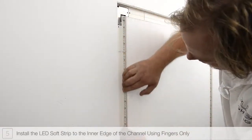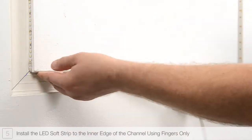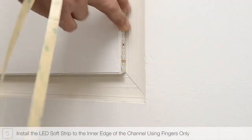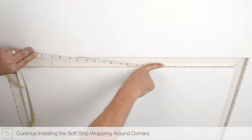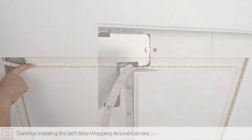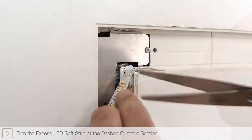Gently press the adhesive backing into the edge of the channel while continuing to remove the paper backing. Continue installing the soft strip wrapping around corners. Trim any excess soft strip along the dashed cutting lines.